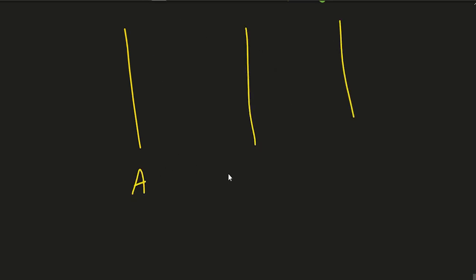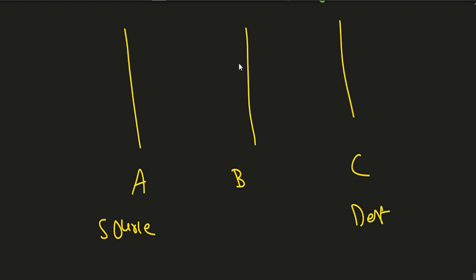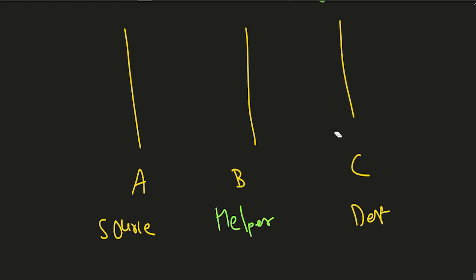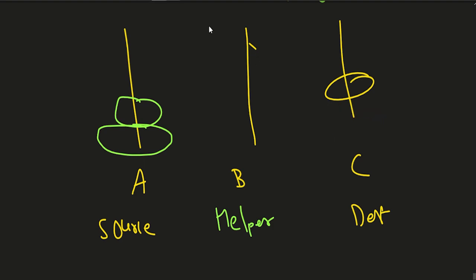In Tower of Hanoi, they give you three towers — let's say A (the source tower), B, and C (the destination tower) — and there will be a helper tower. Suppose there is just one disk: you can directly take it and put it on the destination. Now let's say there are two disks — the first is larger and the second is smaller. You have to make sure you can put at most one disk at a time.